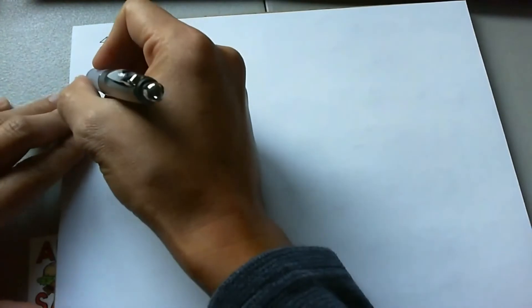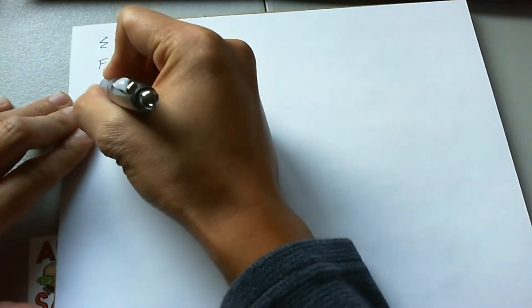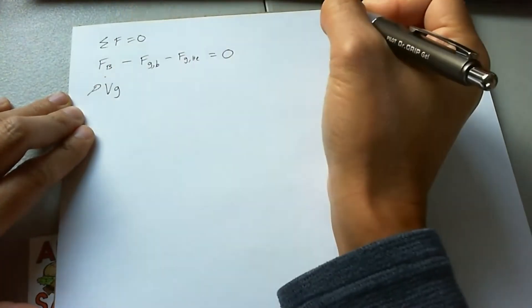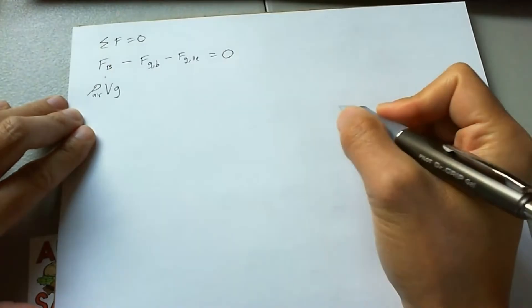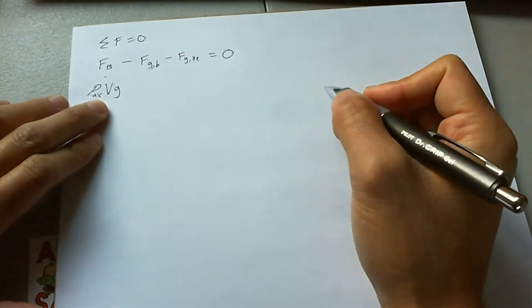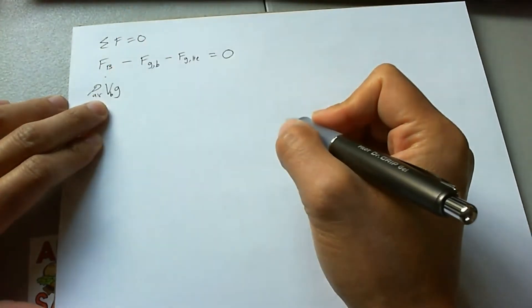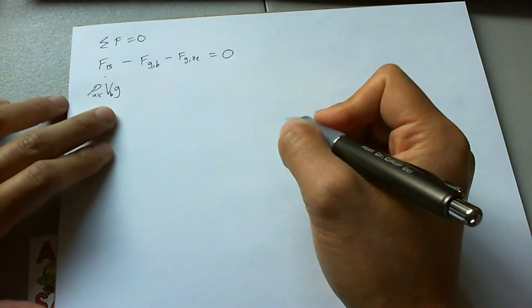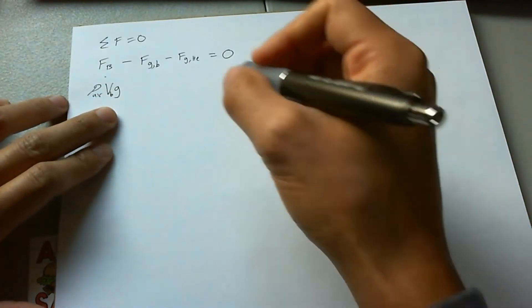The equation for buoyancy is going to be rho VG. Now what does that mean? That's the rho of the surrounding medium. In this case, it's air. V is going to be the volume of the air displaced, which actually happens to be the volume of the balloon B. And G is just going to be G. And we're going to assume that G does not change significantly with the height of the hot air balloon.